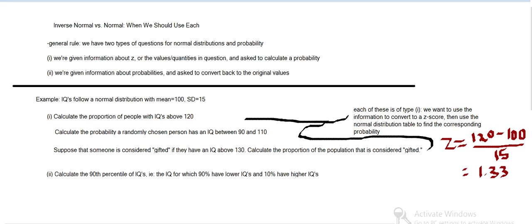But the second type is if we want to calculate the 90th percentile of IQs—the IQ for which 90% of people have lower IQs and 10% have higher—then we look up the z-value for the 90th percentile.